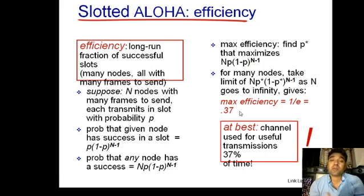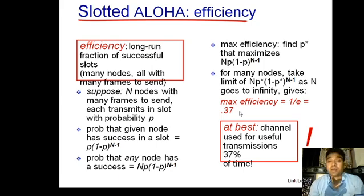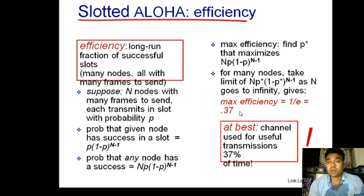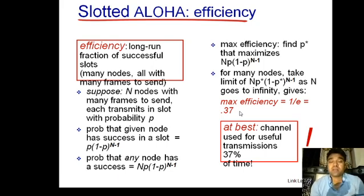Comparing with Pure ALOHA: out of 100 frames, only 18 frames get successful transmission. So Slotted ALOHA is far better than Pure ALOHA among random access protocols. In the next lecture, we will study CSMA, which stands for Carrier Sense Multiple Access. Thank you.